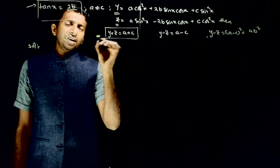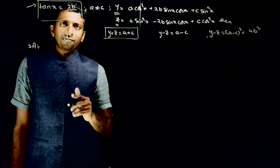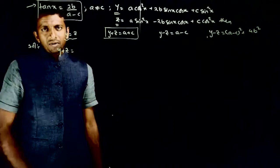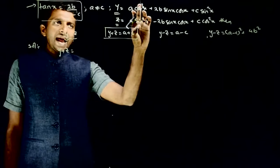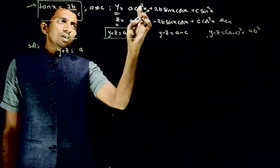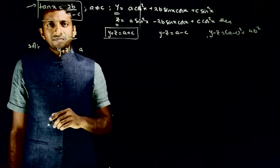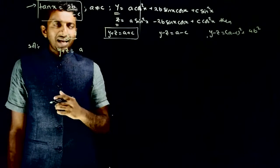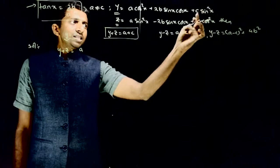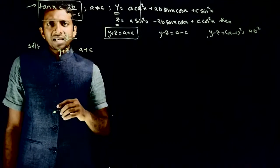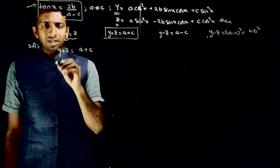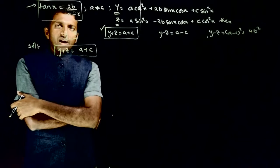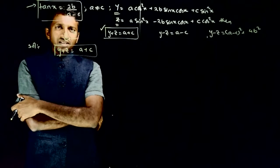Let us check the second option first, as it looks most straightforward. y plus z equals a times (cos²x plus sin²x), which is 1. The 2b sin x cos x terms cancel each other. Finally, c sin²x plus c cos²x equals c times (sin²x plus cos²x), which is 1. So y plus z is equal to a plus c. This is correct.